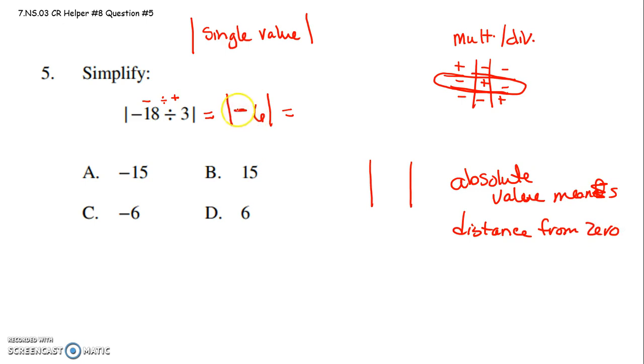So this absolute value of negative 6, that's 6 units from 0. Negative 6 is 6 units from 0. It happens to be 6 units to the left of 0. But when we talk about the distance, the absolute value is just a positive 6, because it represents 6 units from 0.